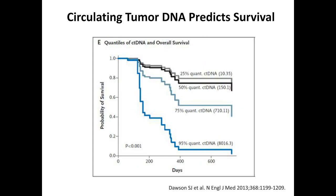CTC also correlates with circulating tumor DNA, or ctDNA. The same ctDNA can come from necrotic or apoptotic tumor cells, not exclusively from CTCs, though CTCs do release ctDNA. Detection of ctDNA copy number in blood can predict survival — high ctDNA copy number correlates with worst prognosis, while low levels are associated with the longest survival.